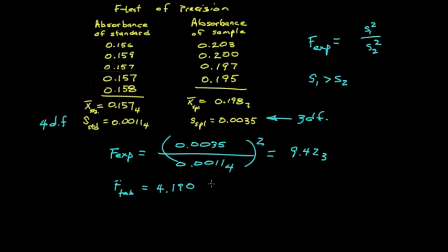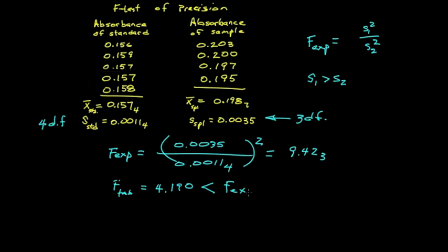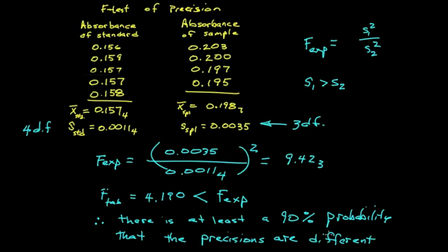And we see that that is less than F that we calculated experimentally. Therefore, we conclude that at least there's a 90% probability that the precisions are significantly different.